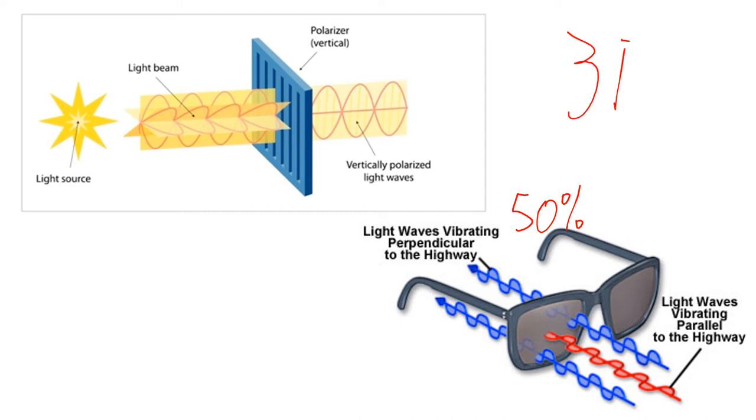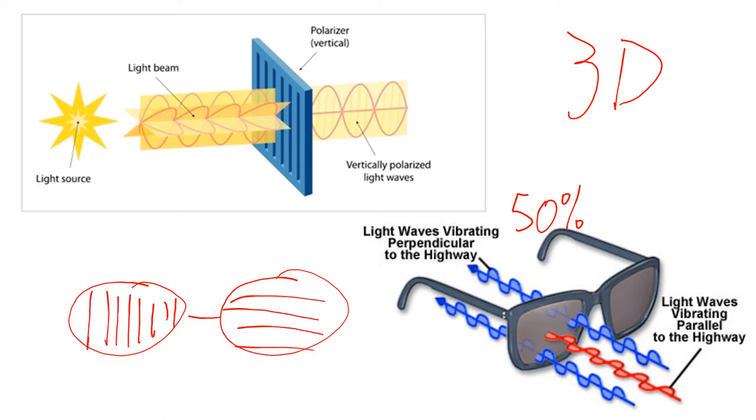It's also how 3D movies work. So you're wearing a pair of sunglasses which has two different polarization filters on the glasses, and you're really watching two movies at once and your brain gets a little bit confused, gives you a 3D movie.